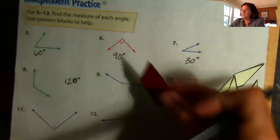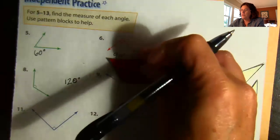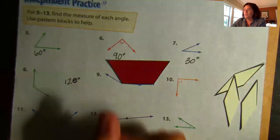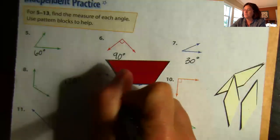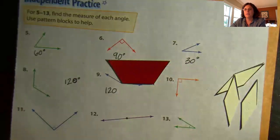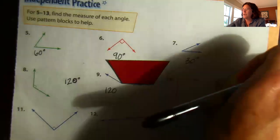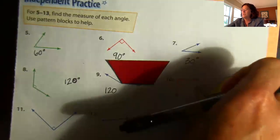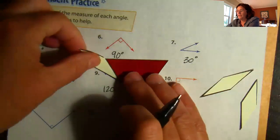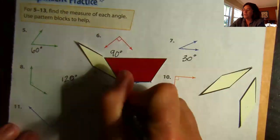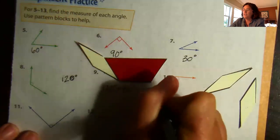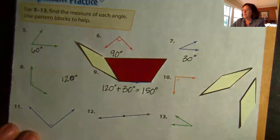All right, this seems like it's a pretty big angle too. Oh no, it doesn't quite fit. So I have 120, but I still have a little more to go, right? So let's see if this small angle on the tan pattern block will fit. Yes, it does. So I have 120 degrees plus 30 degrees equals 150 degrees. Very good.